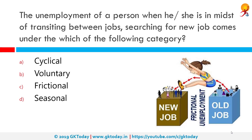The unemployment of a person when they are in the midst of transitioning between jobs or searching for a new job comes under which category? The correct answer is Frictional unemployment. Frictional unemployment is a type of unemployment, also called search unemployment, and is the time spent between jobs when a worker is searching for or transitioning from one job to another.